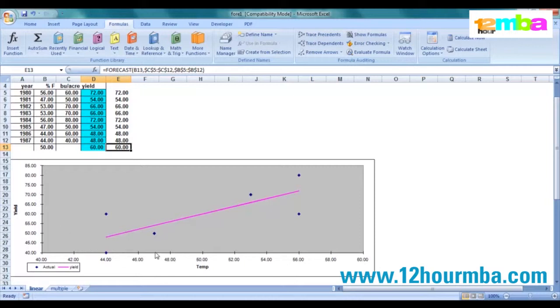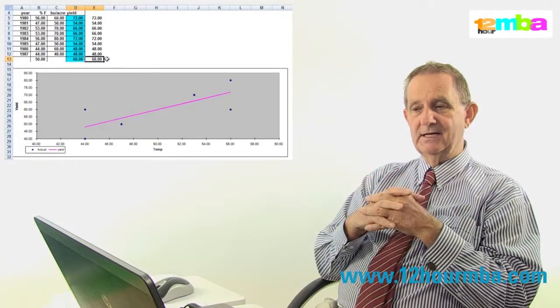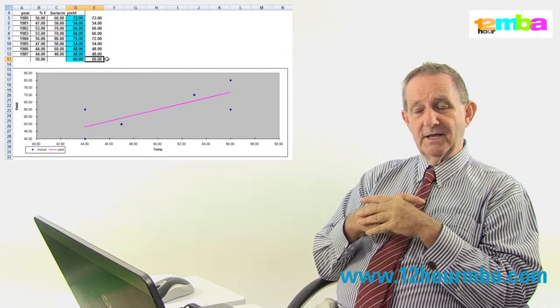If you come across to the temperature at 50 and come up and then read across, you can see it's 60 bushels per acre. So that's how you do a simple linear forecast in Excel.